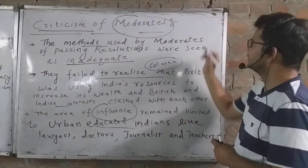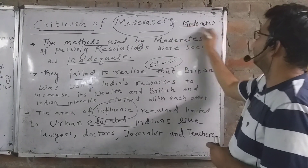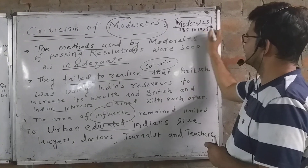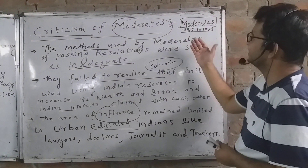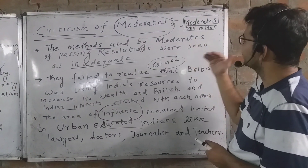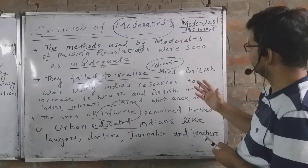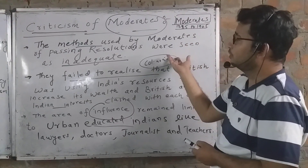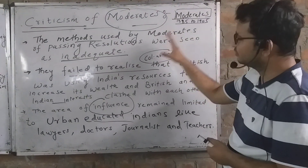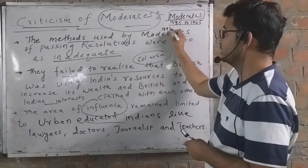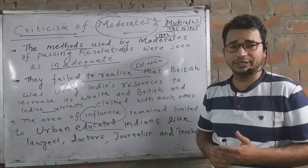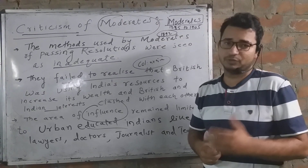So that covers today's topic — the moderates. Key takeaway points: the moderate phase of the Indian National Congress is 1885 to 1905. Leaders include Surendranath Banerjee, Dinsha Wacha, Dadabhai Naoroji, Ranade, and Gopal Krishna Gokhale. Remember their methods like pamphlets, passing resolutions, and memorandums, their achievements, and who criticized them. We will learn about extremists in the next class. Hope you understood. Share, like and subscribe. Thank you and have a nice day.